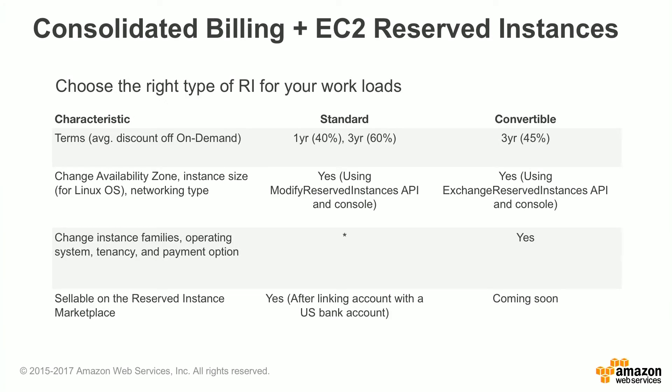Let's talk about some things you need to consider when choosing the right type of RI for your workloads. The first thing to consider is the term. You can get a one- or three-year RI for standard reserved instances — with a one-year RI you get about 40% savings off on-demand pricing, and with a three-year RI you get about 60% savings. With a convertible RI you can only do three-year terms and you get about 45% savings off on-demand pricing. For both convertible and standard RIs, you can change the availability zone, instance size, and networking type of your instances.